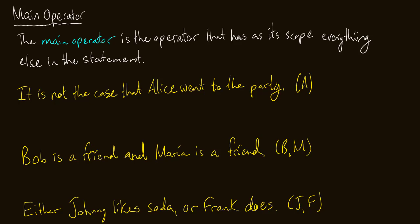Today we're going to talk about how to identify the main operator in a statement that is represented only by symbols and capital letters, because that's an important skill to have. What is the main operator? The main operator is the operator that has as its scope everything else in the statement.